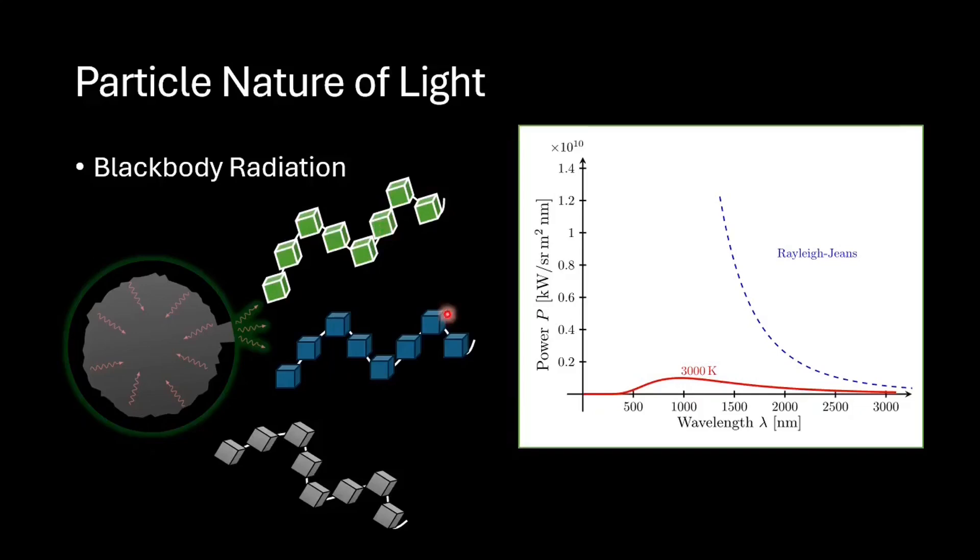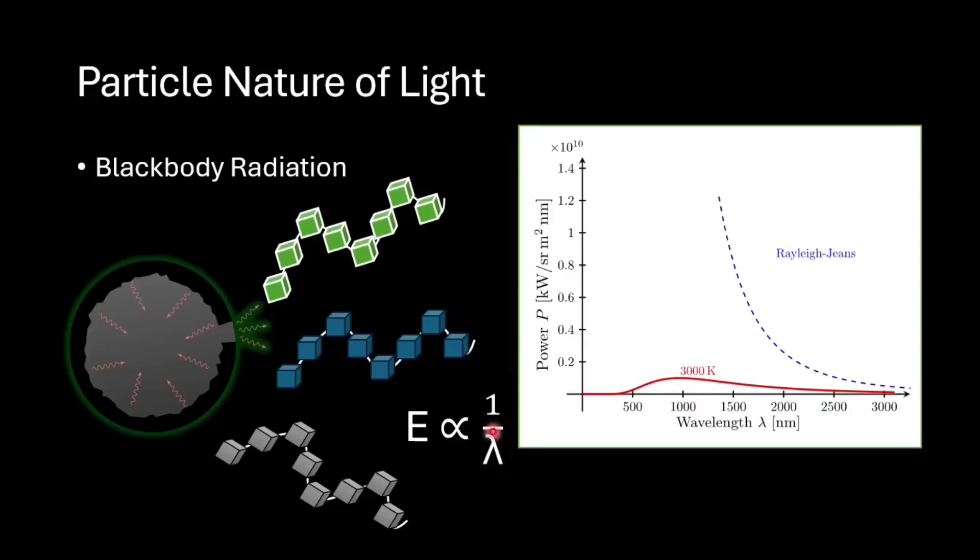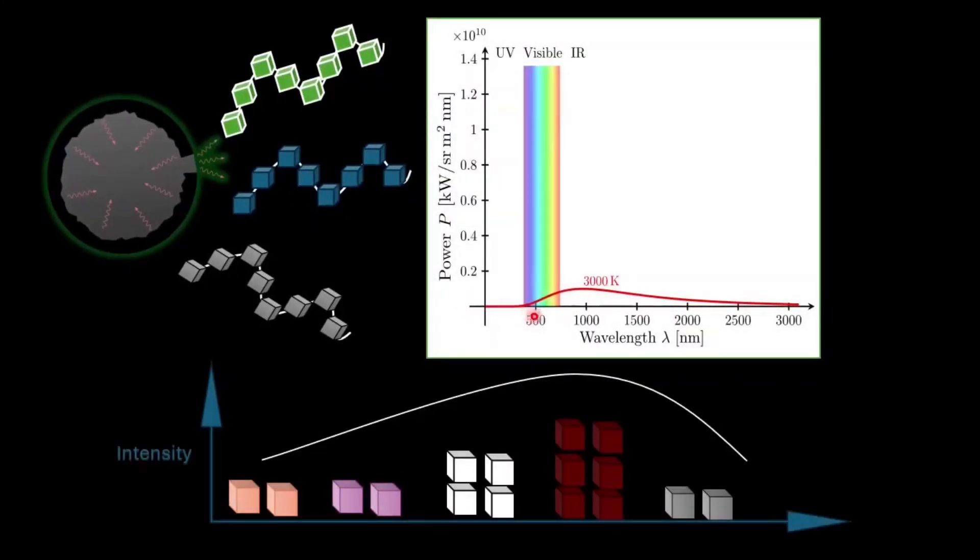The particles of light are called photons and the energy of each photon is inversely proportional to its wavelength. And the energy carried by a spectrum of the black body radiation was dependent on the number of photons emitted in that region of spectrum. In this particular graph, as we can see that when the black body is at a temperature of 3000 Kelvin, the intensity peaks at around 1000 nanometer.